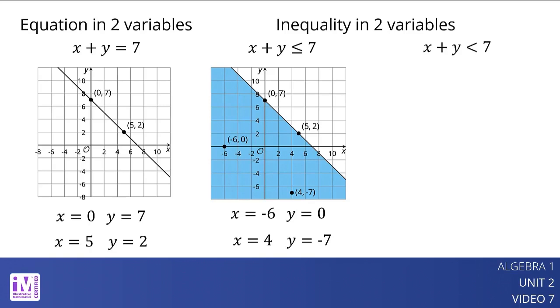The solution is any pair of x and y whose sum is less than 7. This means pairs like x equals 0 and y equals 7 and x equals 5 and y equals 2 are not solutions.